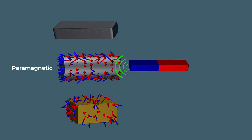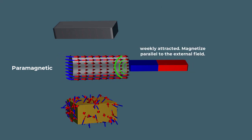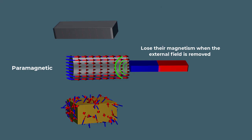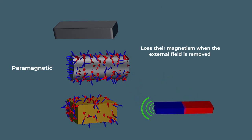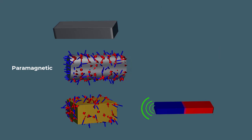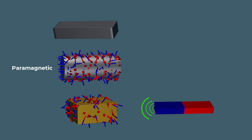Paramagnetic materials are a class of materials that are weakly attracted to magnetic fields. Unlike ferromagnetic materials, which can become permanent magnets, paramagnetic materials lose their magnetism when the external field is removed. Examples include aluminum, platinum, and oxygen.